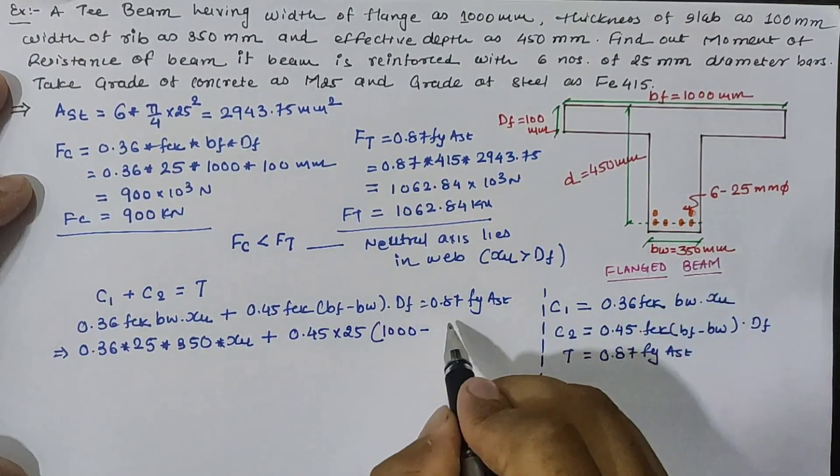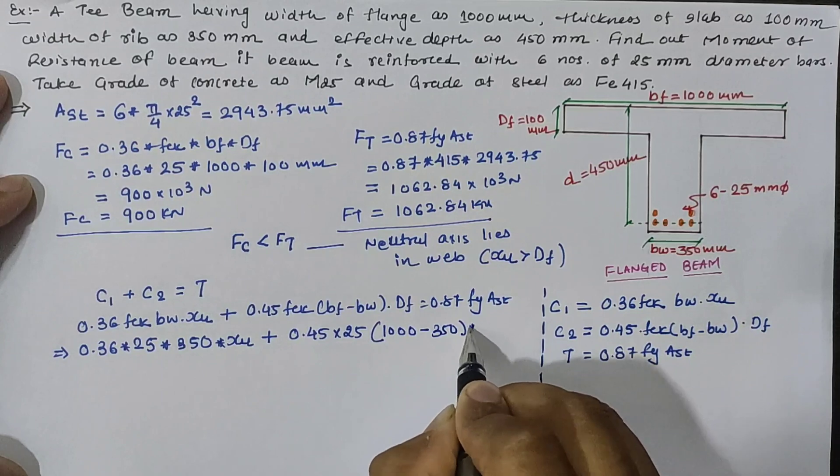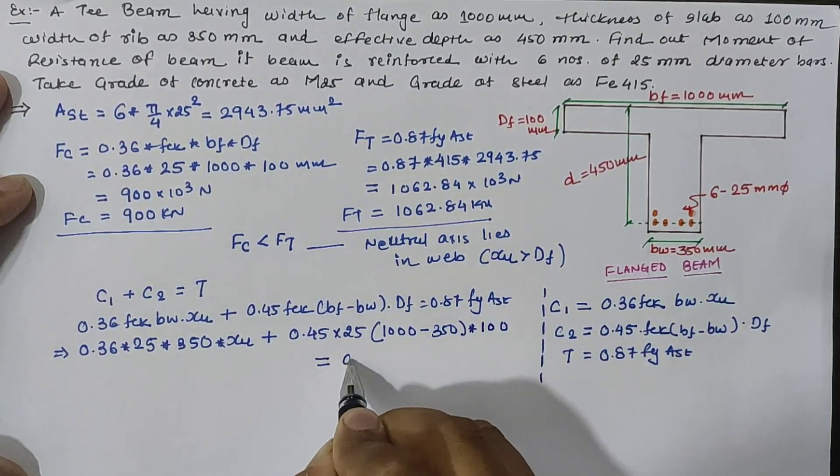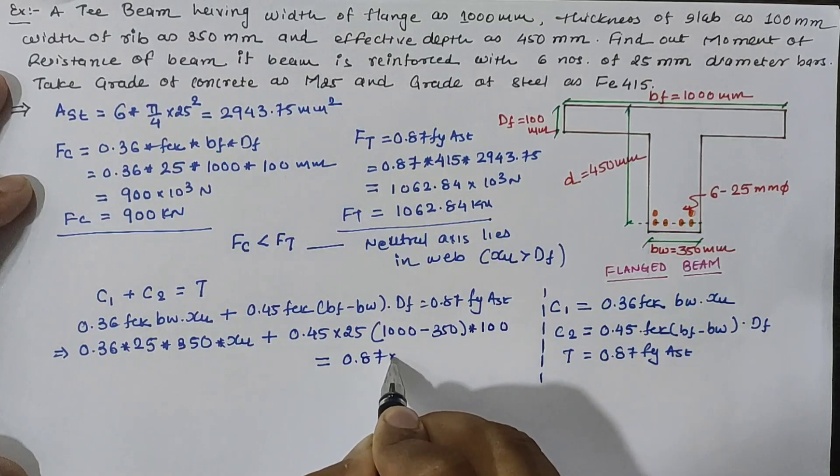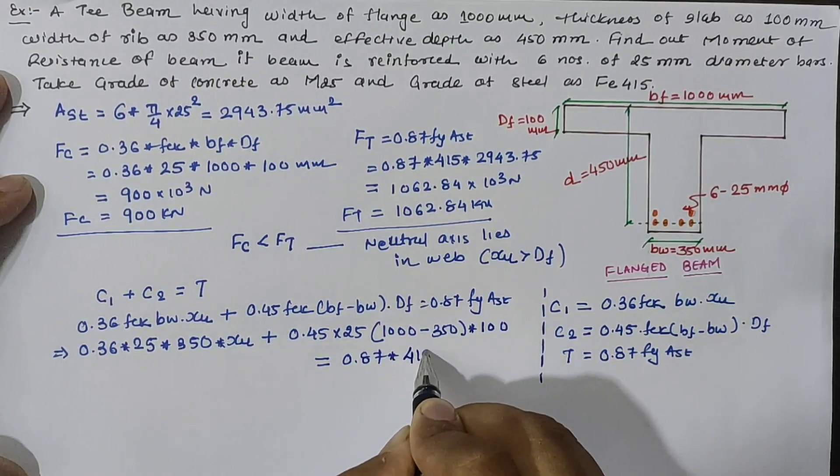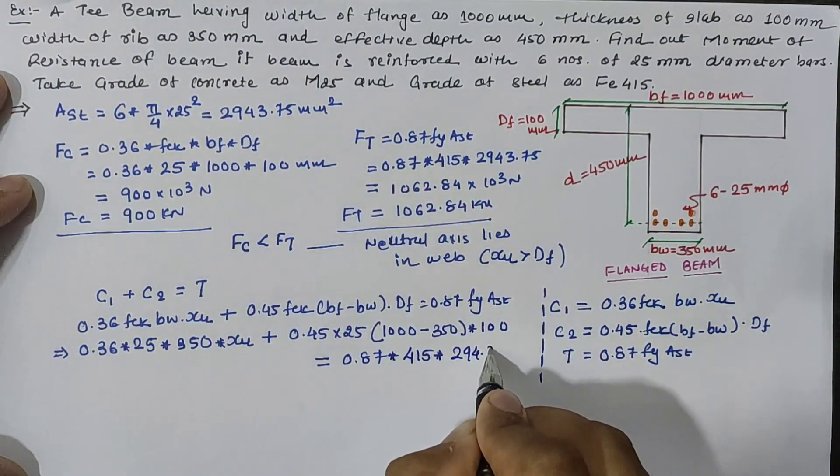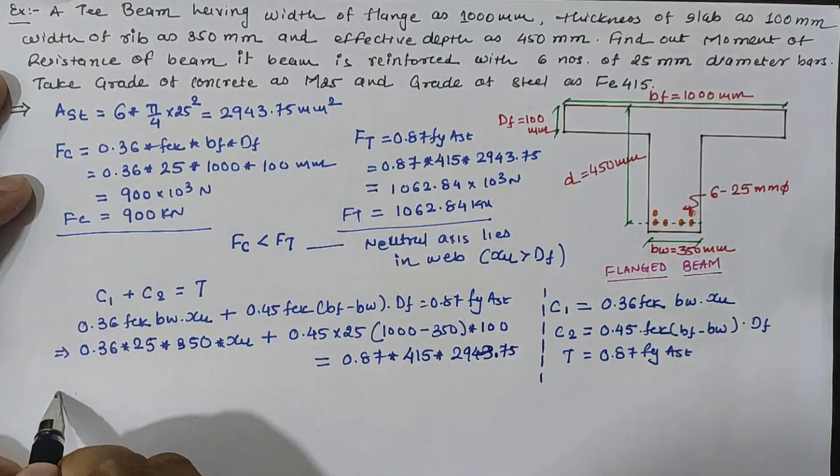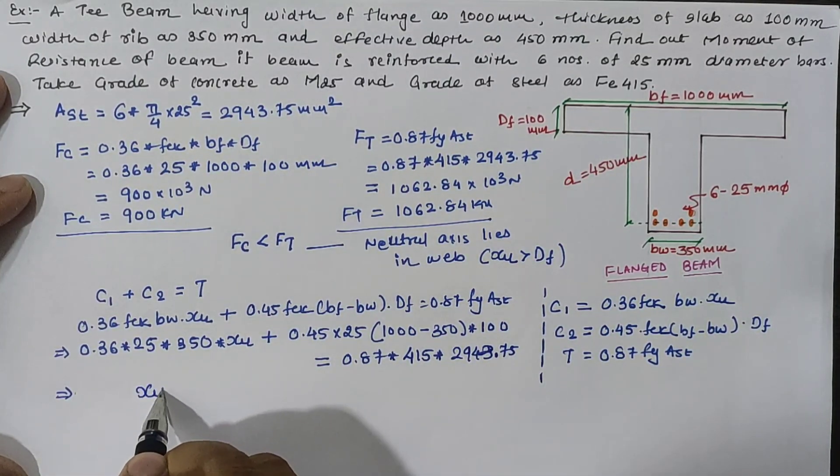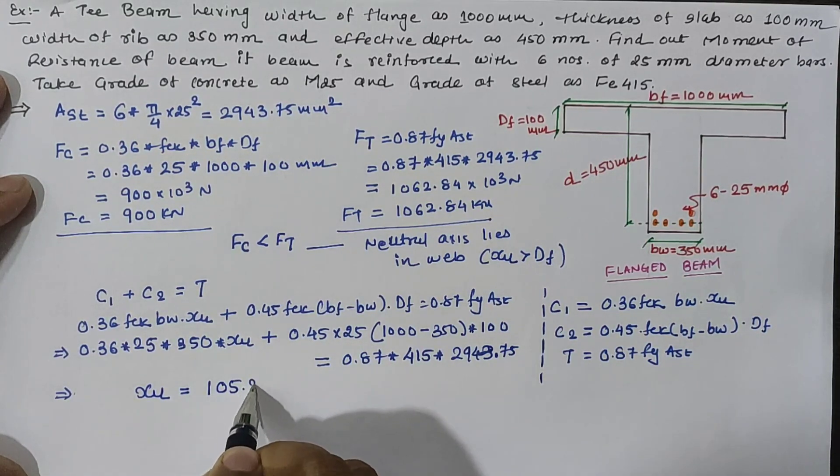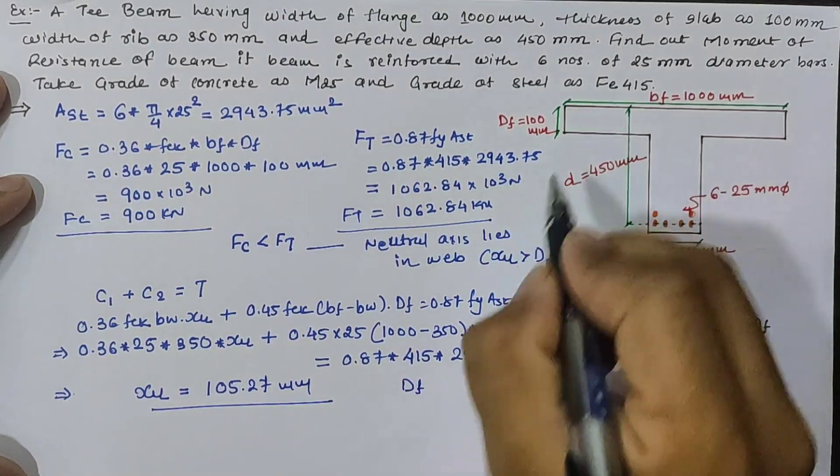bw width of web is 350 into depth of flange is given as 100 mm, which is equal to 0.87 fy is given as 415 N/mm² and Ast is 2943.75. Now solving this equation we have xu is equal to 105.27 mm.